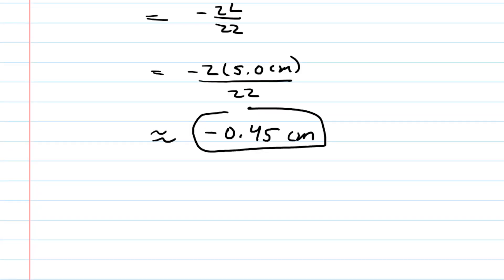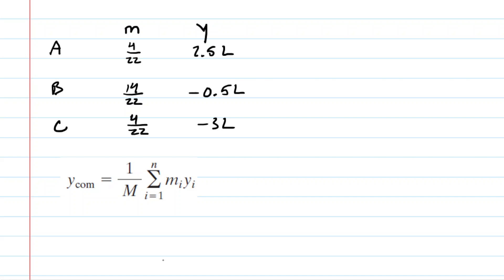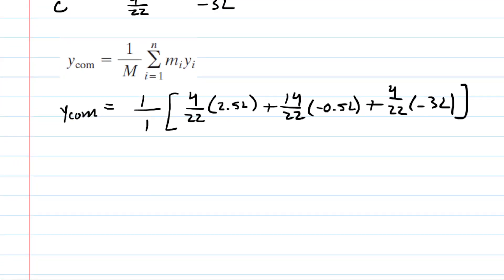For part B, we'll do something very similar, but with the y-coordinates. So there is our equation for the y-coordinate of the center of mass. We will do 1 over the total mass of 1 multiplied. Now we've reset the table using the y-coordinates this time. So we have 4 over 22 multiplied by 2.5L plus 14 over 22 multiplied by negative 0.5L, finally plus 4 over 22 times negative 3L.